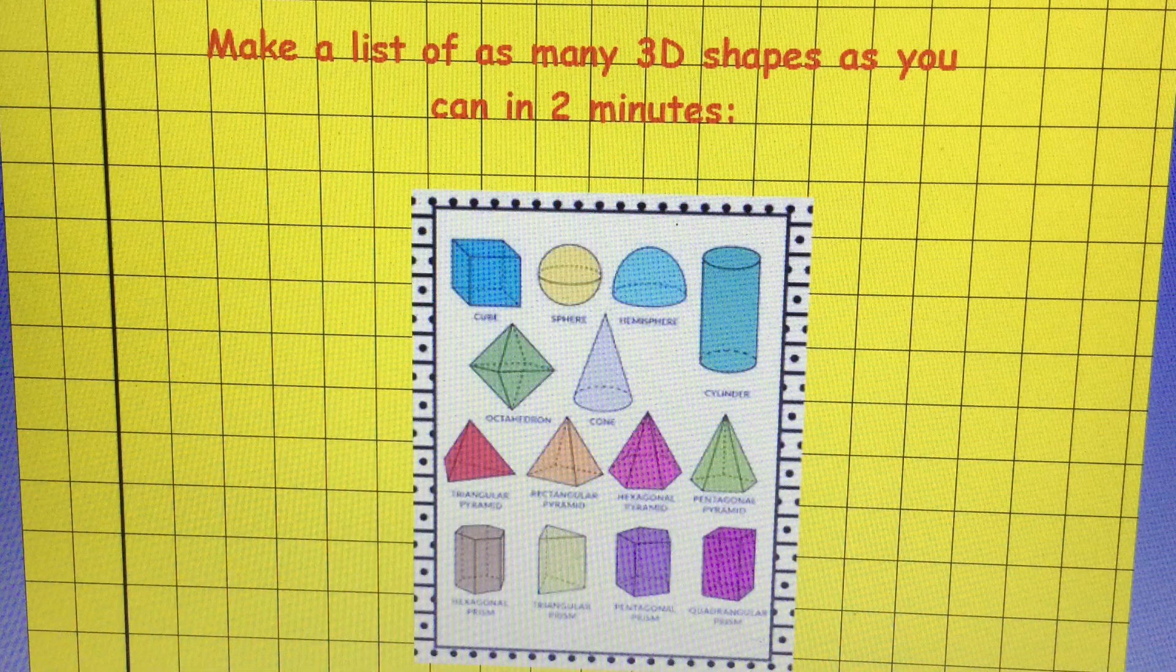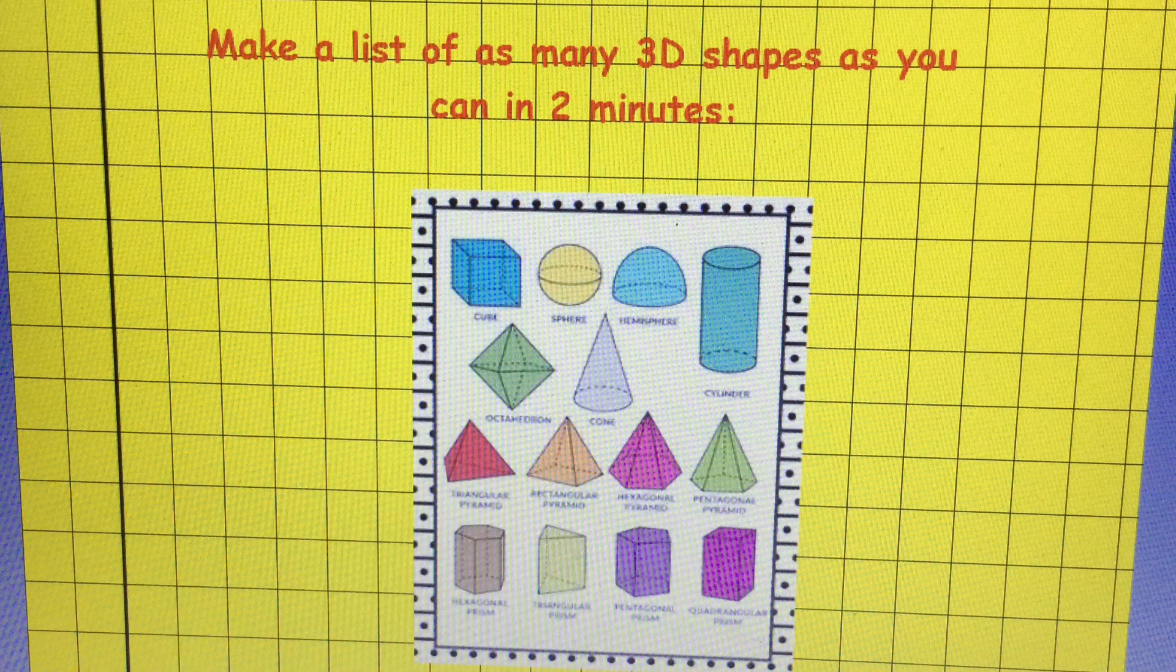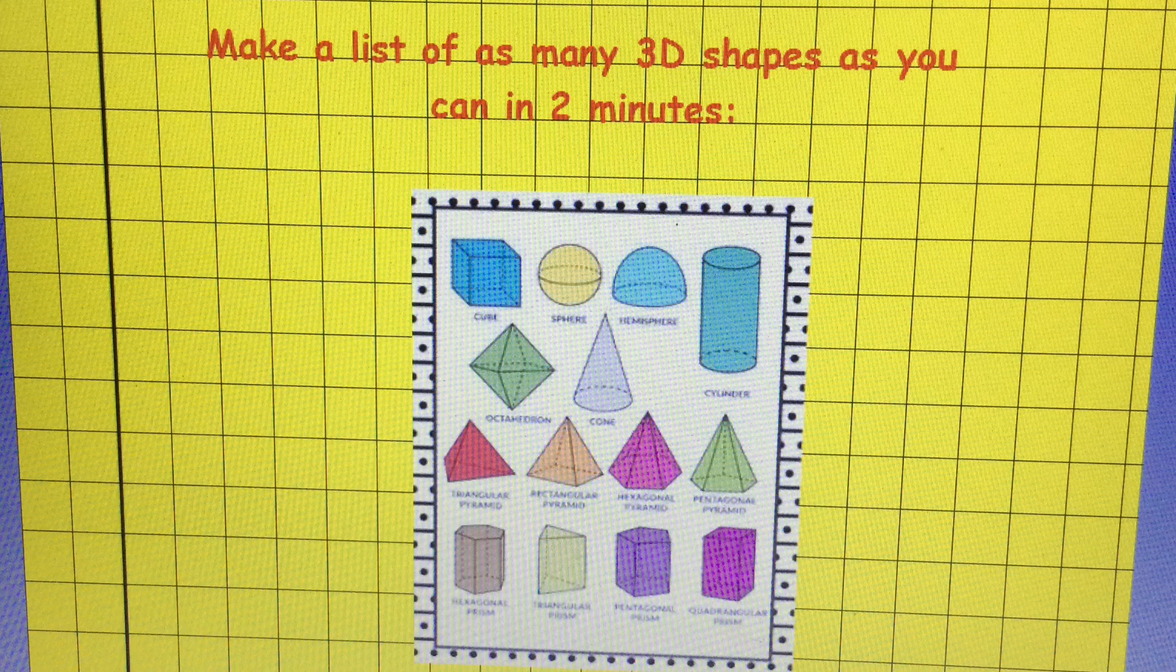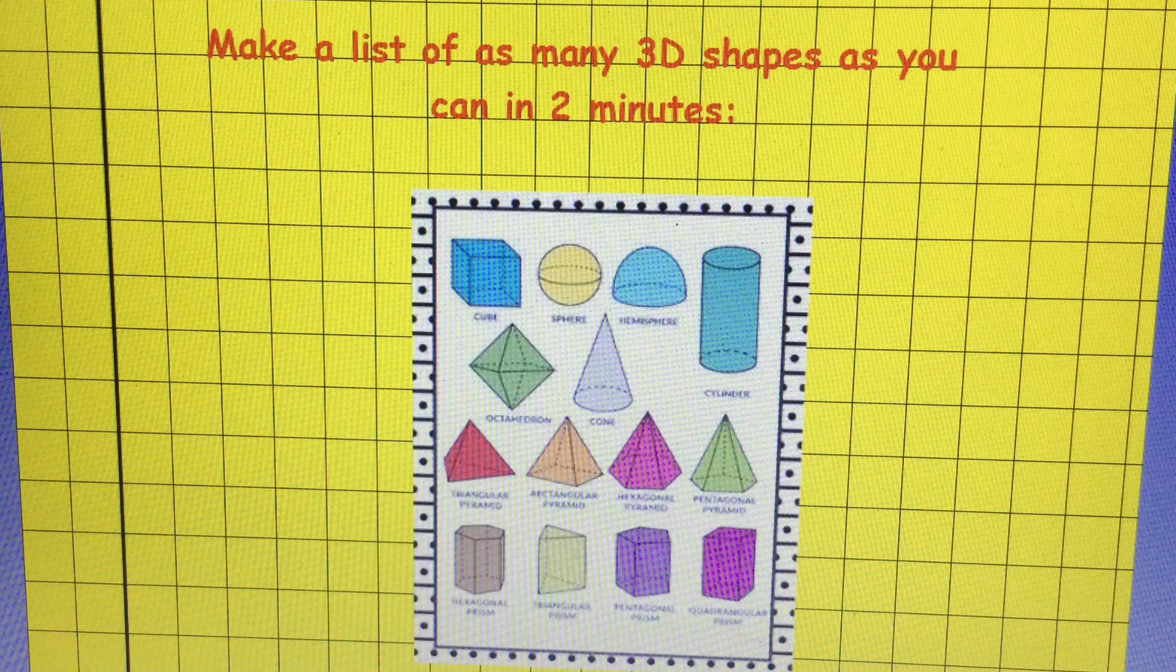So for our place value activity this morning, the largest number you could have had was 964 and the smallest number you could have had was 24, but you would have had to have included the zero as the first digit in 24. And here are a few examples of some 3D shapes you may have named.